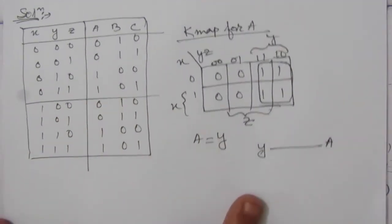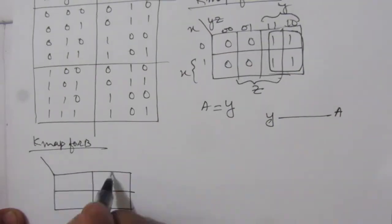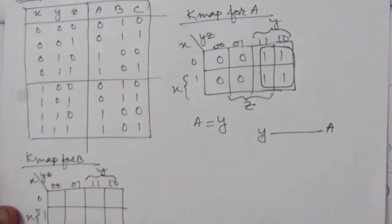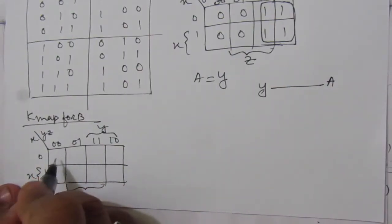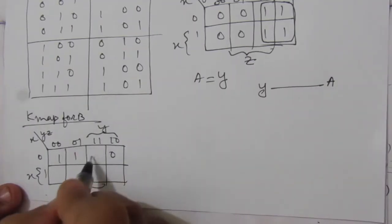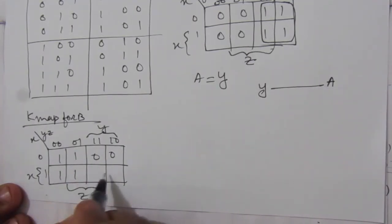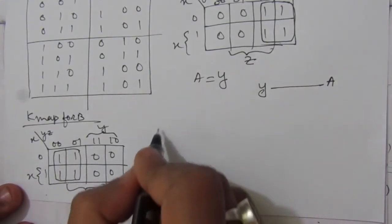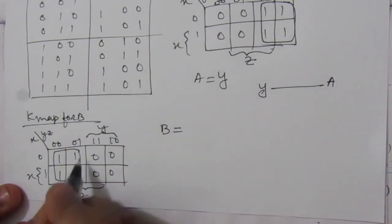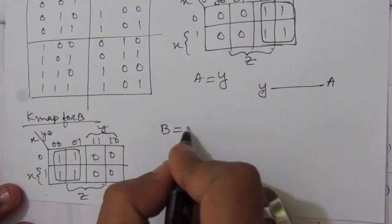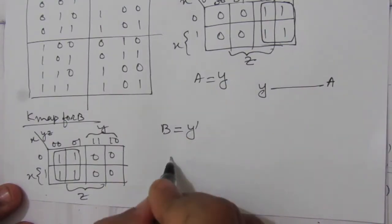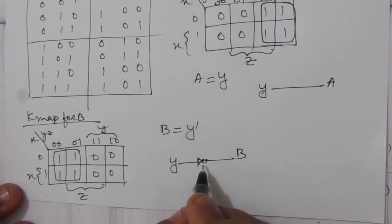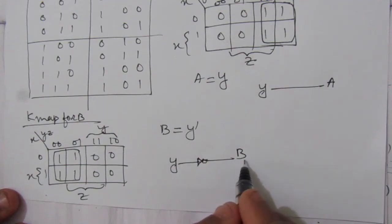Now for the K-map for B: we place the B values — 1, 1, 0, 0, 1, 1, 0, 0 — into the K-map. We can combine these groups and we get B equal to Y-bar (Y complement). So if we take input Y and pass it through an inverter, the output is Y-bar, which gives us output B.